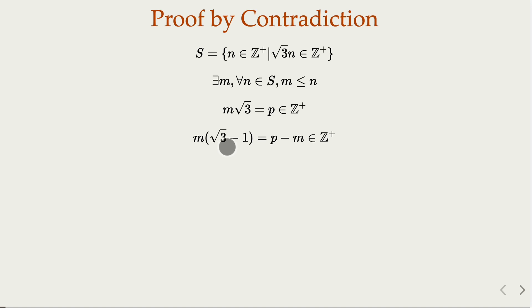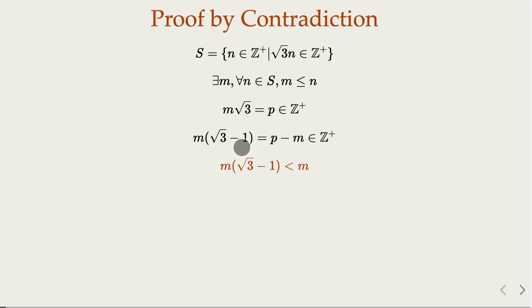Now, how does this integer compare to m? Since square root of 3 is less than 2, square root of 3 minus 1 is less than 1, which means m times (square root of 3 minus 1) is strictly smaller than m.